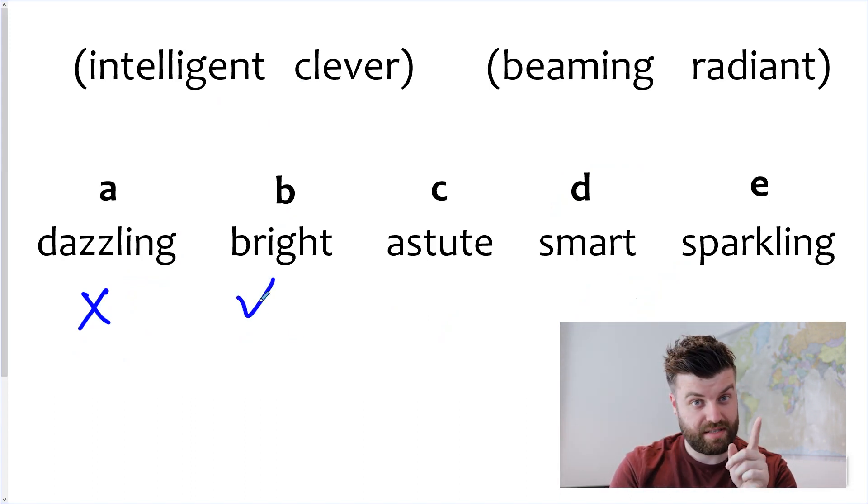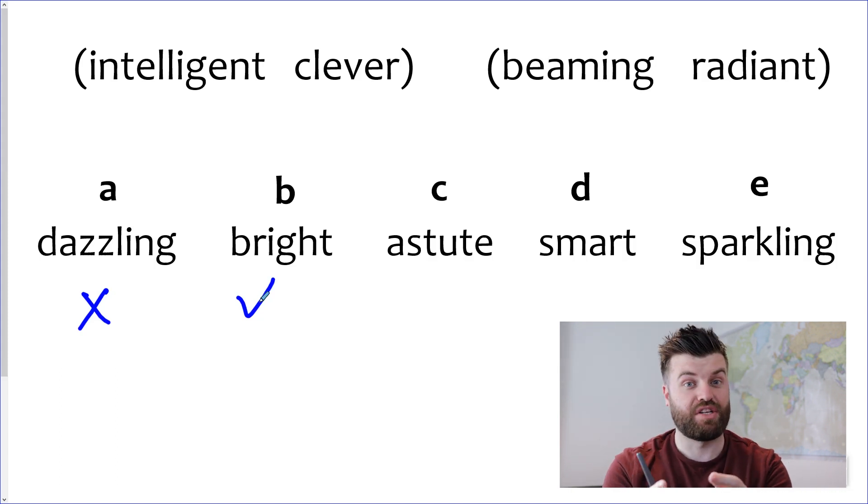You can describe someone as very bright which means they're very clever, so it does go with the first set. Does it go with the second, beaming and radiant? Here's where this question also tests your vocabulary knowledge. You need to know what words mean. Do you know what radiant and beaming means?